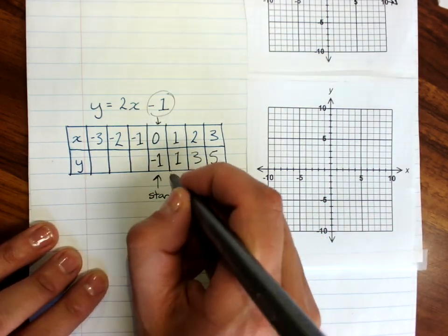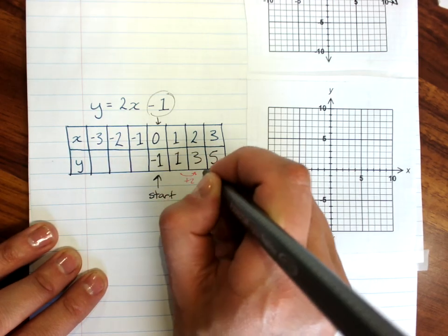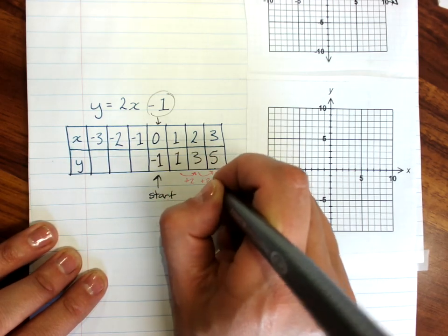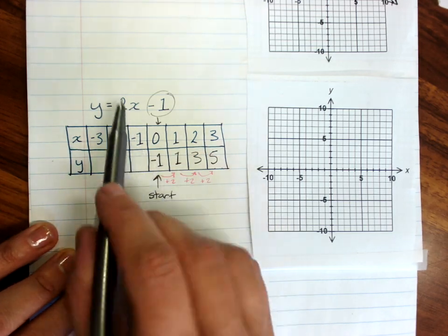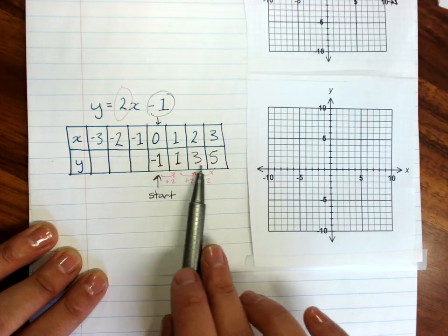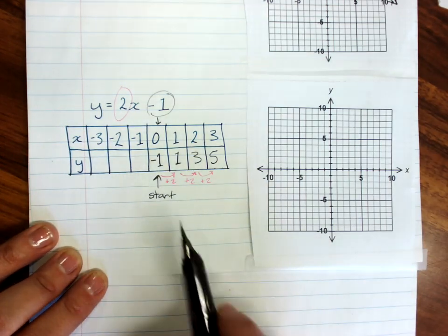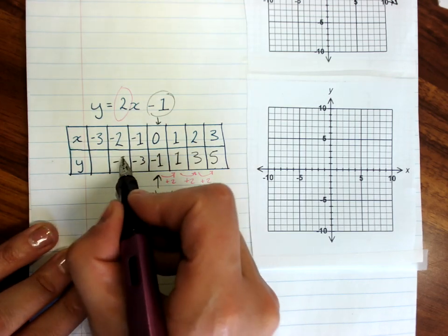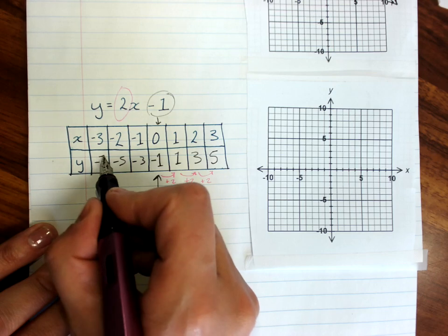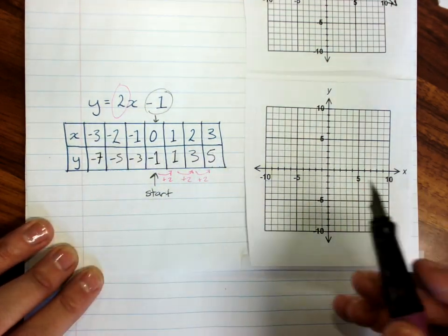Now honestly, have a look at the pattern here. From 1 to 3, that's plus 2. From 3 to 5, that's plus 2. From negative 1 to 1, that's plus 2. The number in front of the x gives you the pattern for the y. And it's easiest to fill these in just by reversing the pattern. Just take away 2, minus 3, minus 5, minus 7.